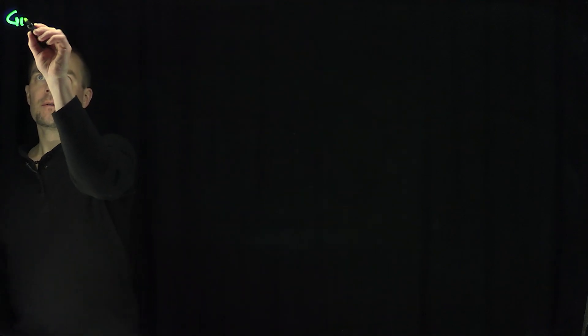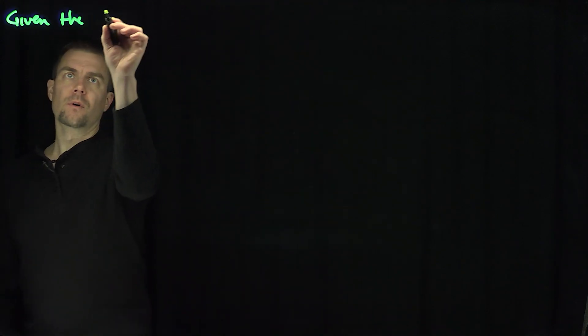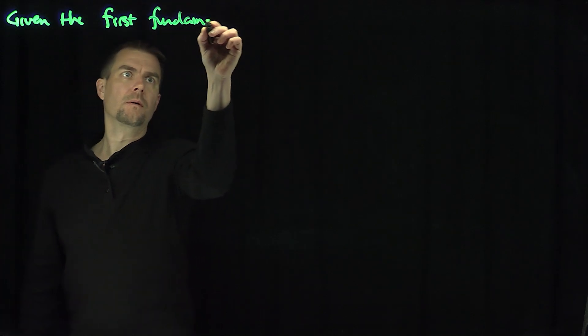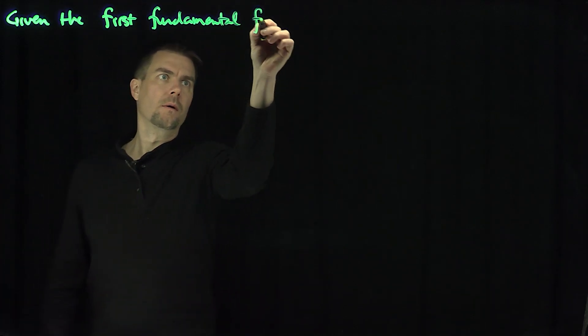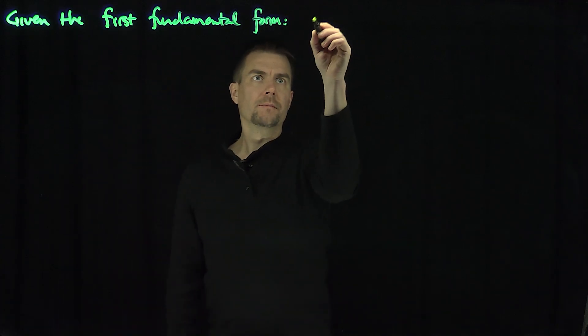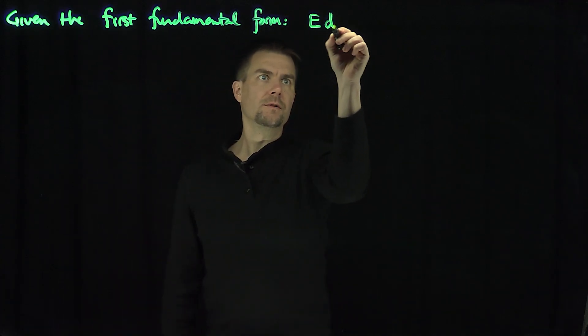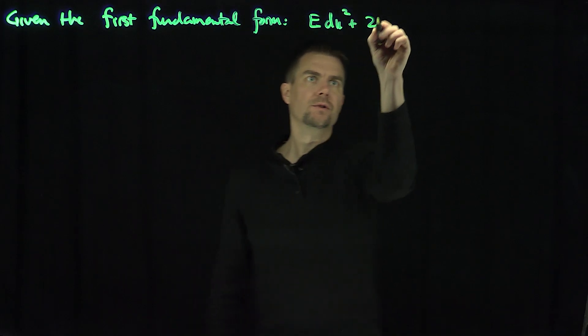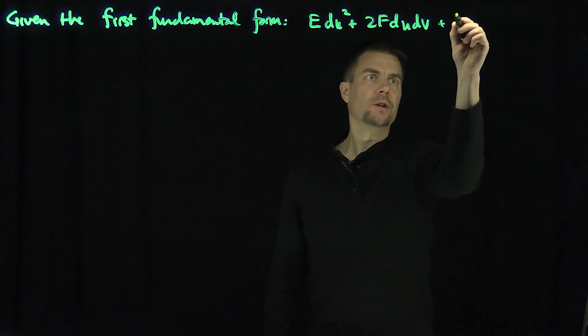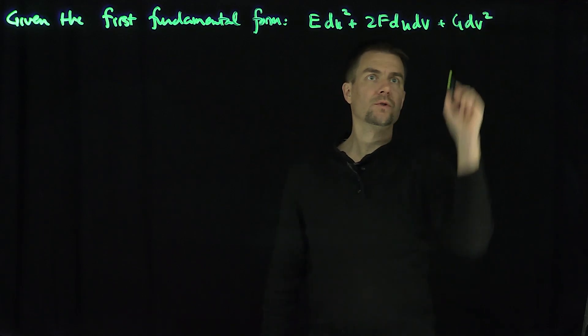Hello students. In this video we'll understand the connection between the first fundamental form and surface area. Let's be given the first fundamental form of a surface: E du squared plus 2F du dv plus G dv squared.